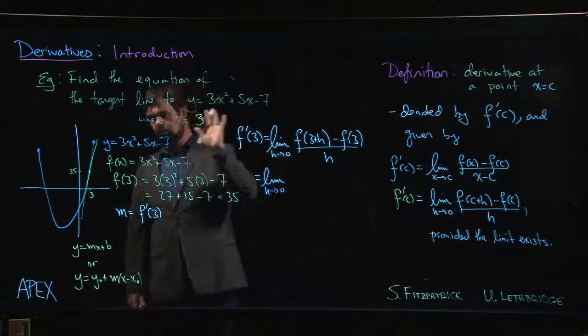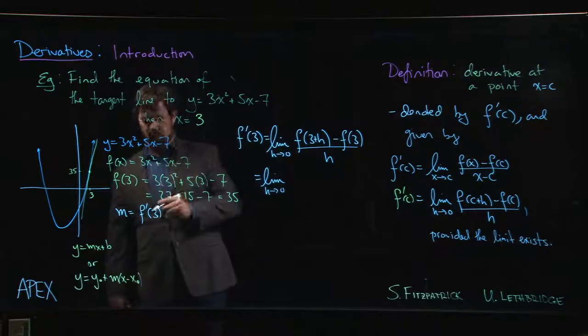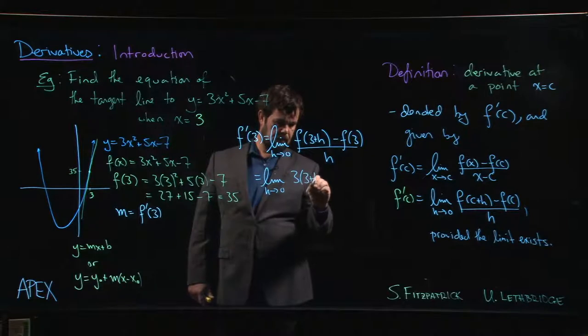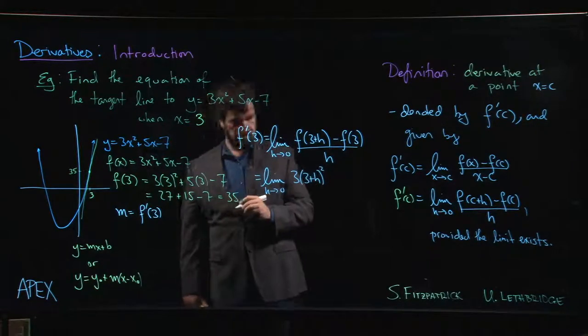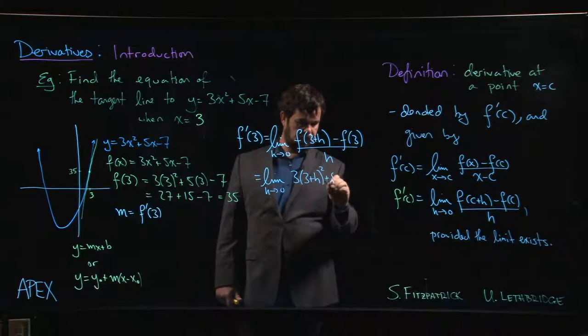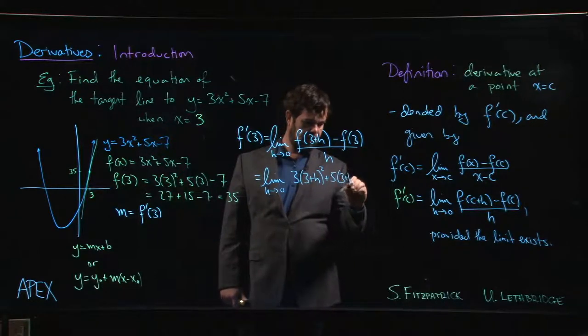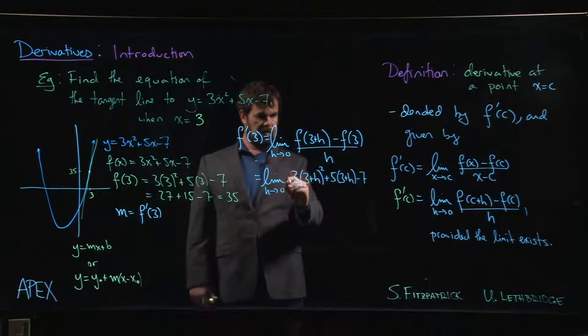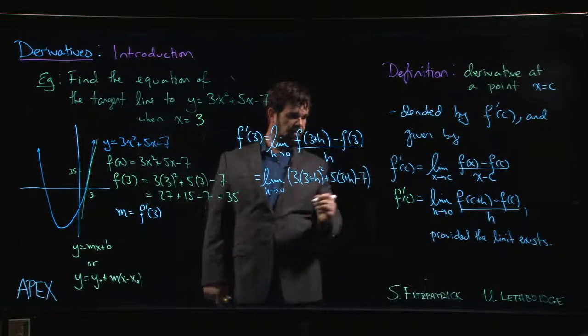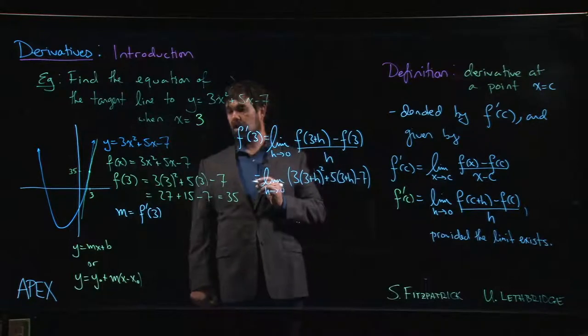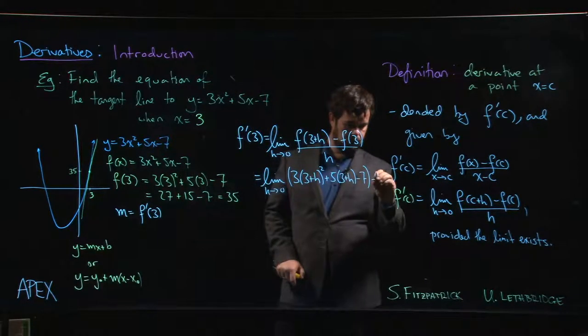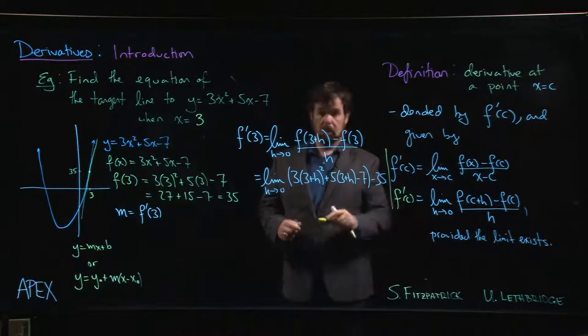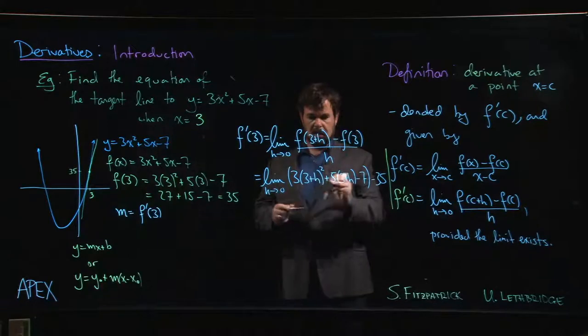So we need 3 times (3 plus h) squared plus 5 times (3 plus h) minus 7. So there's f of 3 plus h. And then we have to subtract off f of 3, which is 35. So let's squeeze that in, put a little line here so we don't get mixed up, and the whole thing has to be divided by h.